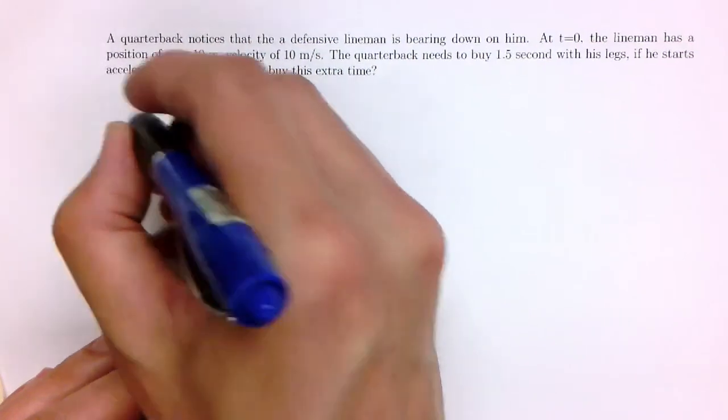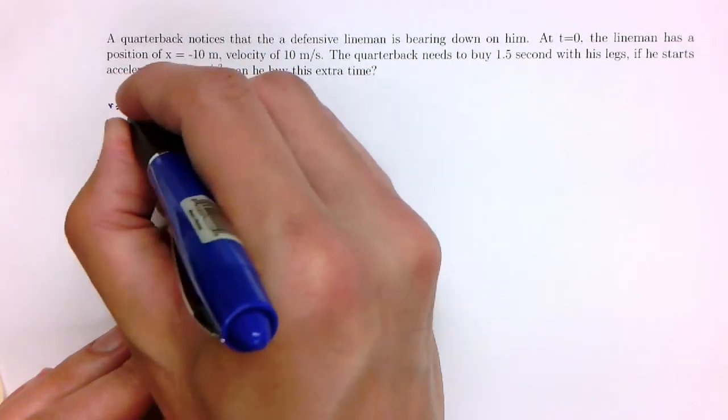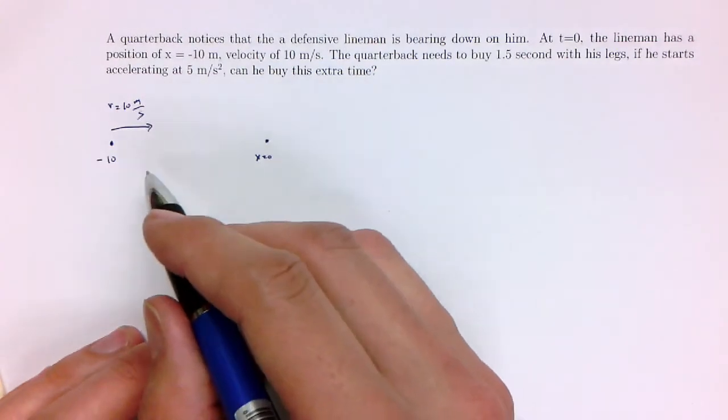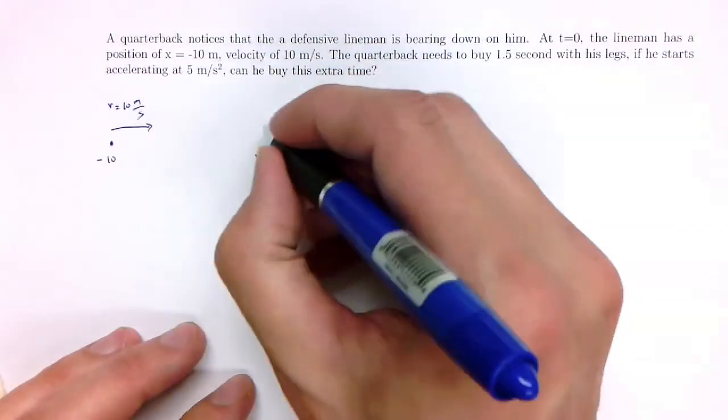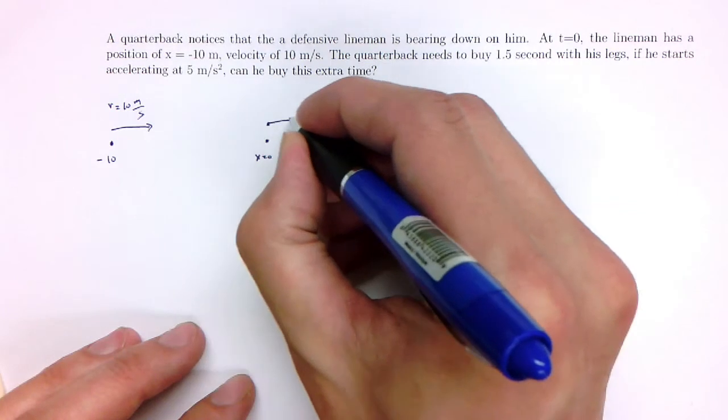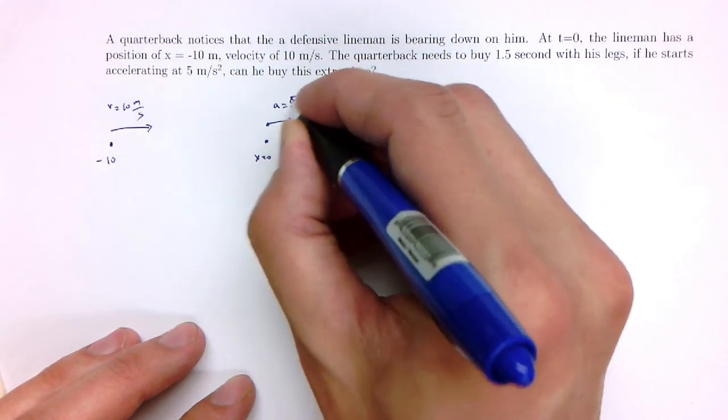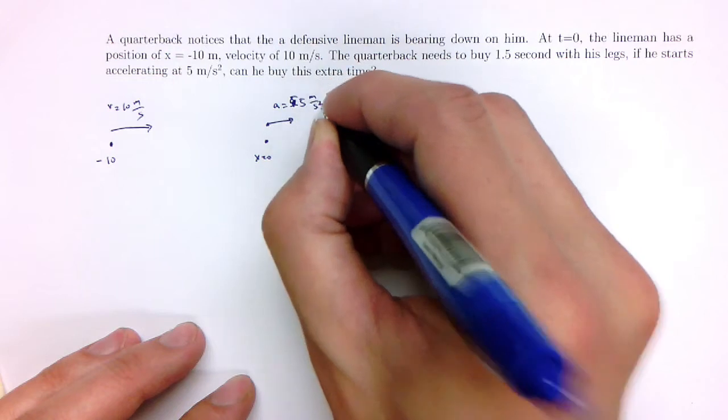The lineman has a velocity moving toward the QB at v equals 10 meters per second. Presumably here, the lineman is running with full head of steam. He won't accelerate anymore. Now, this quarterback is going to run away from the lineman with an acceleration equal to 5 meters per second squared.